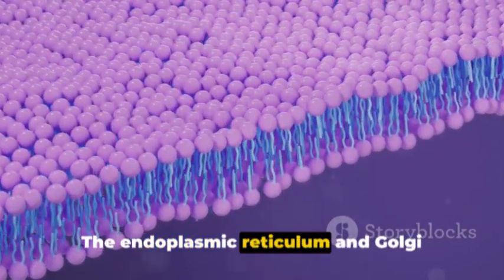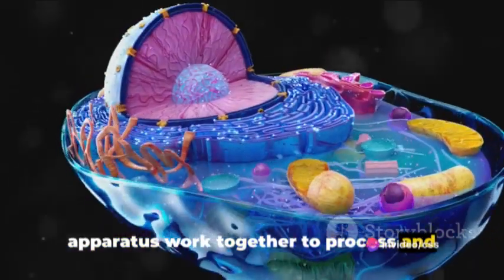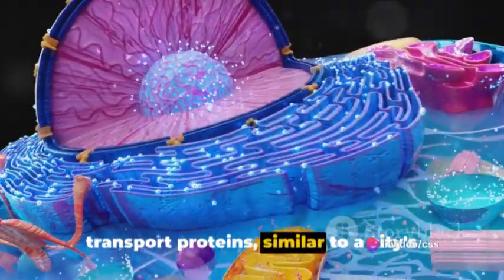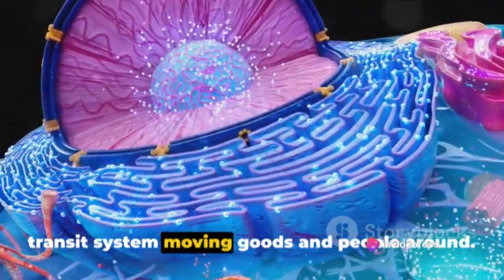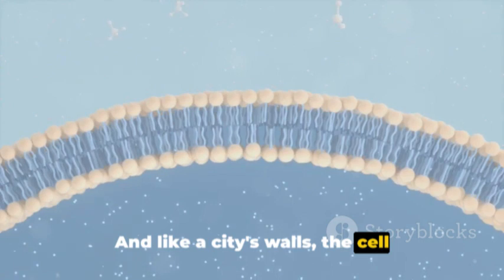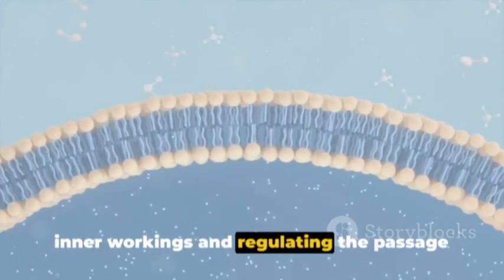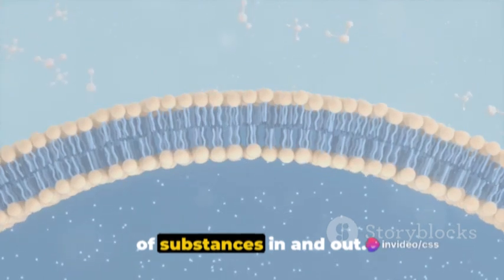The endoplasmic reticulum and Golgi apparatus work together to process and transport proteins, similar to a city's transit system moving goods and people around. And like a city's walls, the cell membrane encloses the cell, protecting its inner workings and regulating the passage of substances in and out.